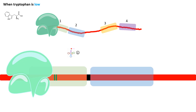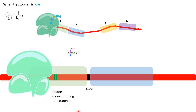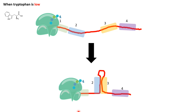When tryptophan is low, there is a specific site in the leader sequence that codes for tryptophan codons. Because tryptophan is scarce, the aminoacyl-tRNA carrying tryptophan is also less abundant, causing the ribosome to slow down. This gives rise to formation of the 2-3 anti-attenuator stem loop, allowing RNA polymerase to move forward and transcribe the downstream tryptophan biosynthesis genes. This attenuation relief makes sense because it allows production of the enzymes needed to convert chorismic acid into tryptophan.